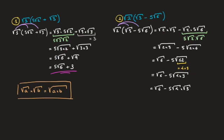Using the fact that the square root of 4 is equal to 2, this becomes the square root of 6 minus 5 times 2 times the square root of 3, which leads to the square root of 6 minus 10√3. And that's the final answer.